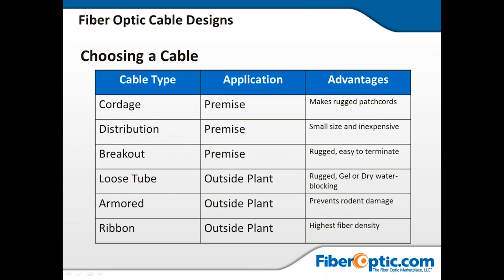To summarize cable types: cordage is your single-mode and multimode patch cords. Distribution has many fibers inside a central cable used to tie equipment together. Breakout cable can go from building to building and be directly terminated. Loose tube outside plant is for running massive amounts of fiber in conduit, lashed to a tower, or in a raceway — used to get from building to building. There's also the armored version for added protection. And don't forget ribbon fiber and aerial self-supporting cables — your ADSS-type cables.